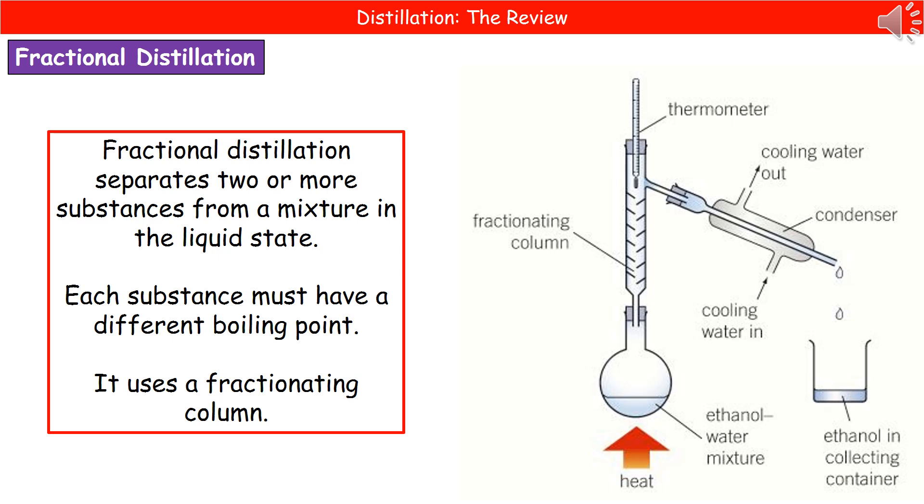That then connects onto a condenser once more because we still need to cool those vapors down into some form of a liquid. The way that this is going to work is it's going to allow us to separate two or more substances from a mixture in the liquid state. So if we've got a mixture of different liquids, then we can actually separate them out into their individual entities. But it does rely on one key fact that all of those substances present within our mixture must have different boiling points.